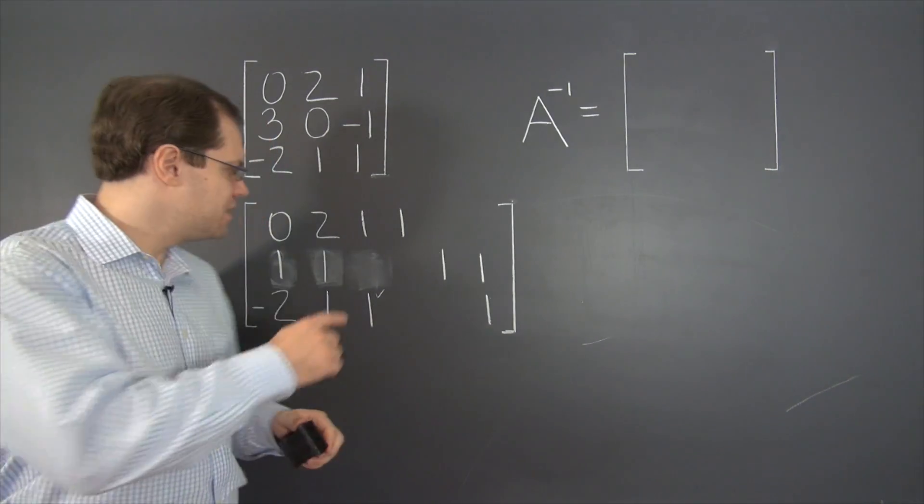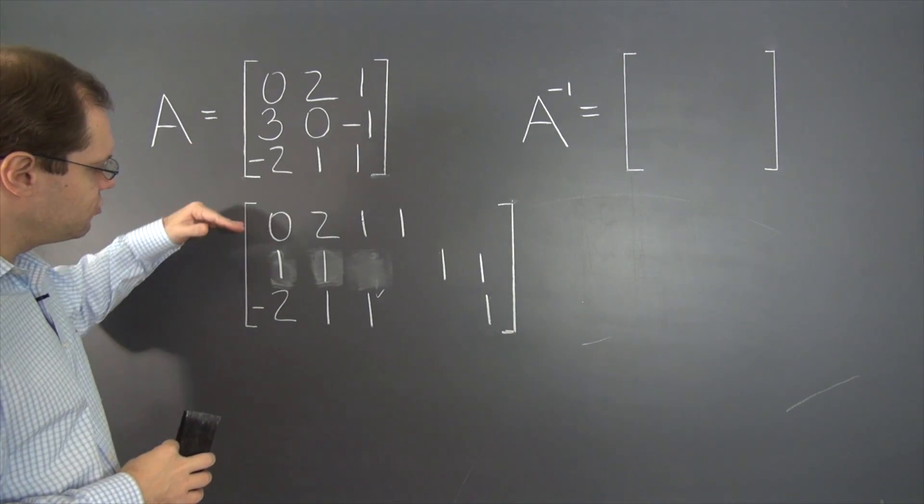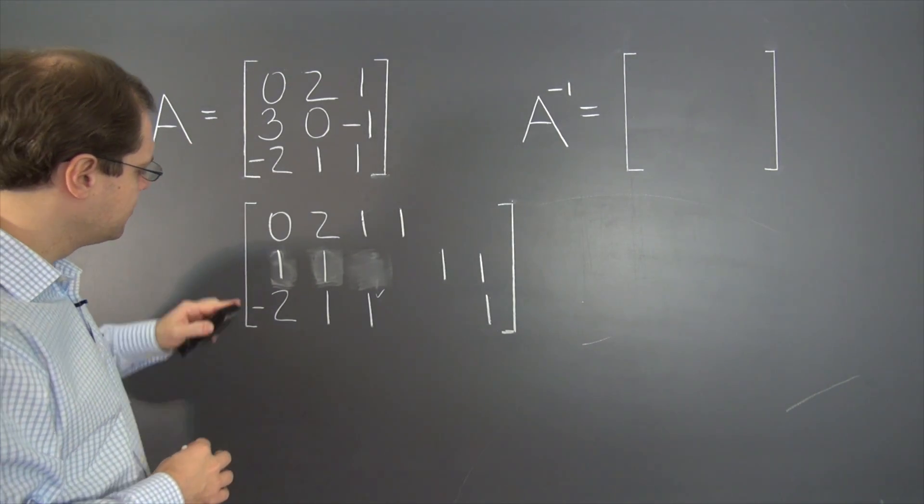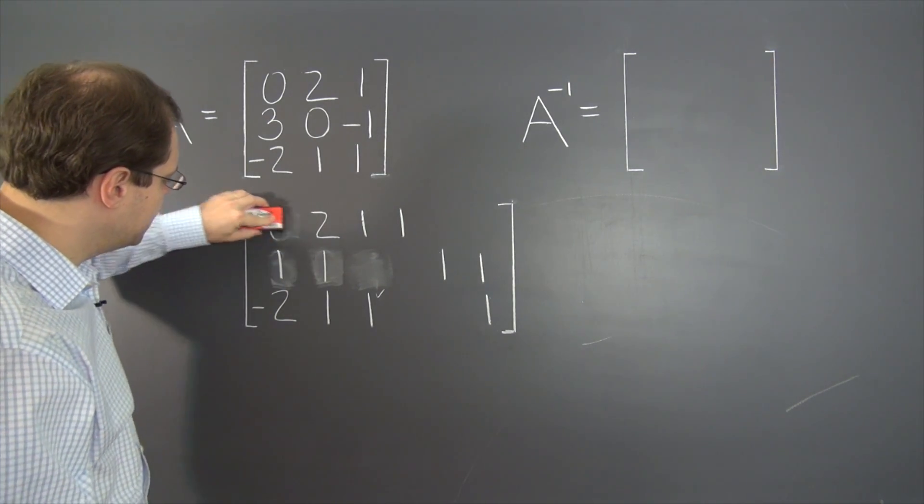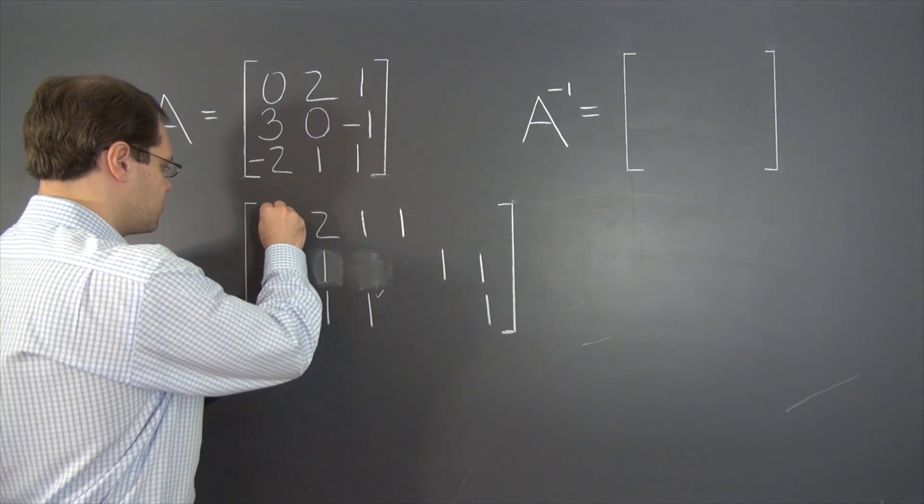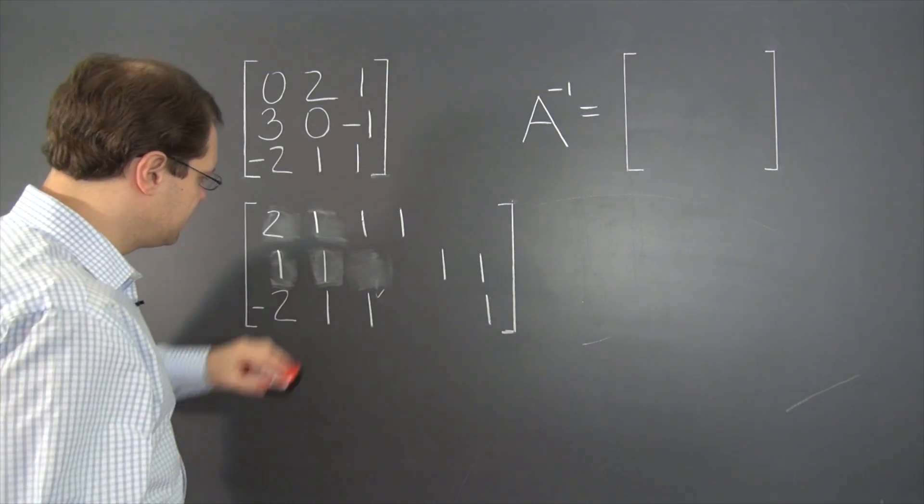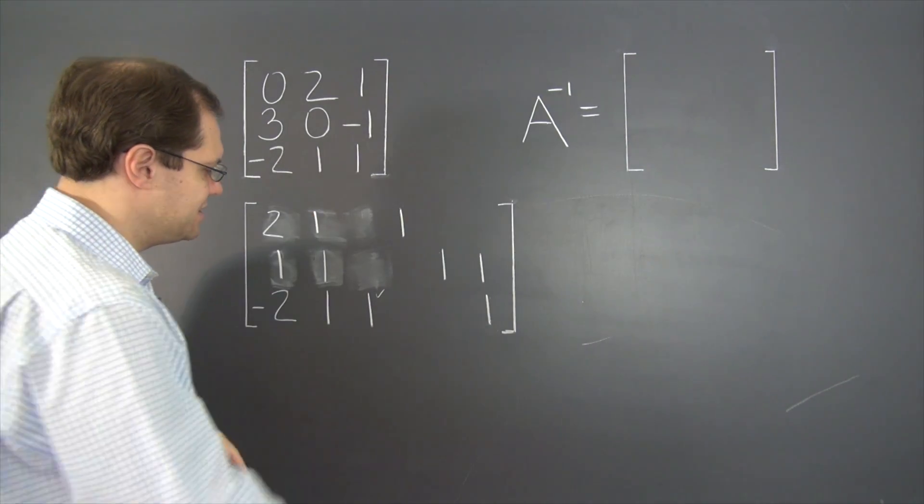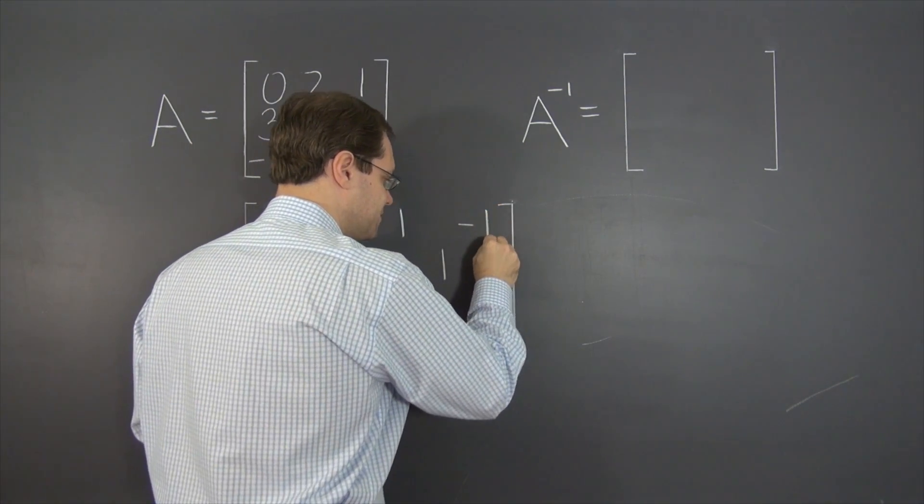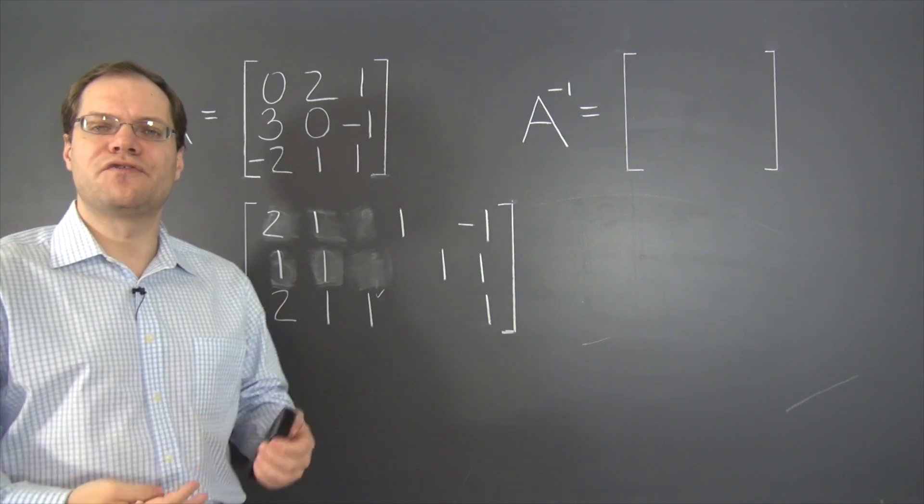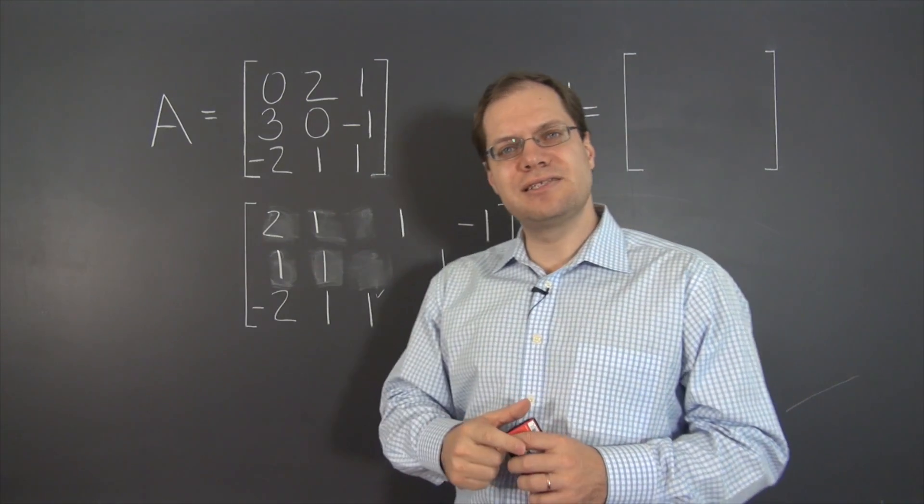So the next step is to eliminate this one. And that is done by subtracting row three from row one. Subtracting row three from row one puts a two right here, a one right here, a one right here, zero here by design, minus one. And we're done with the first group of operations. We have our first pivot and everything above it is eliminated.